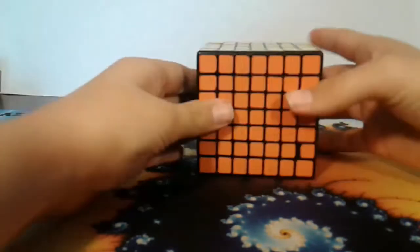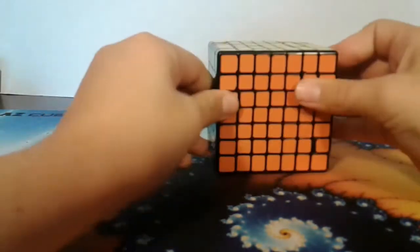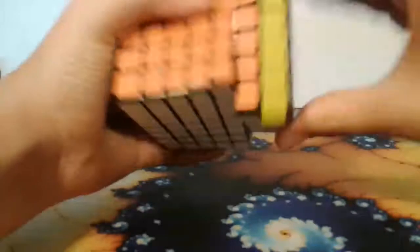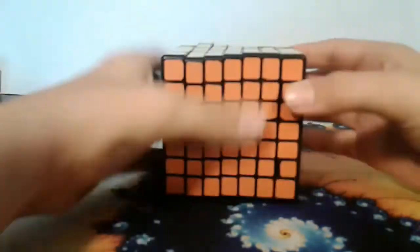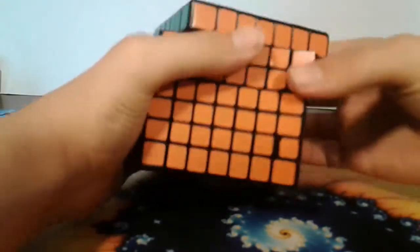My number fifth favorite cube is my seven by seven. It's just really big and gigantic and I really like it. It's really smooth turning too and just has a really nice feel. I'm thinking about replacing the stickers because the stickers are kind of chipping and it's got really weird shades like the orange.